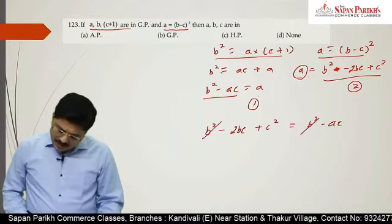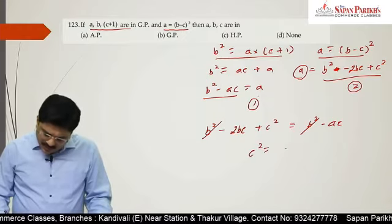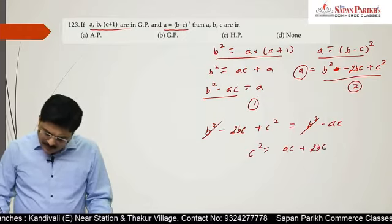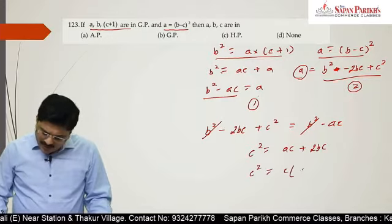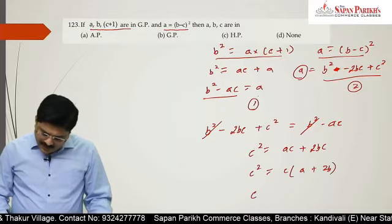Now c² is equal to ac plus 2bc. So c² is equal to c common taken out, a plus 2b. Now c also gets canceled.